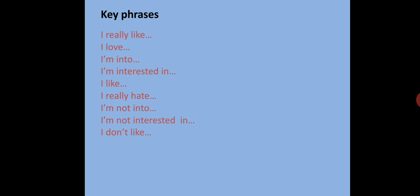During our lesson, today we use this kind of key phrases. Next, I really like, I love, I'm into, I'm interested in, I like. These phrases are used when you like something. Next, I really hate, I'm not into, I'm not interested in, I don't like. These phrases are used when we don't like something.